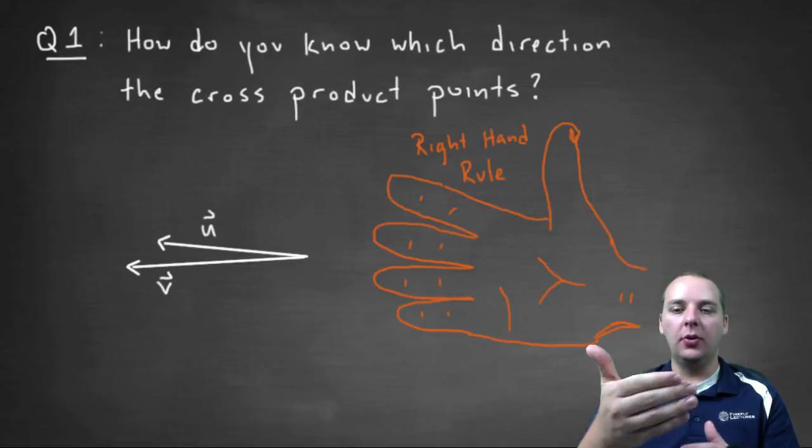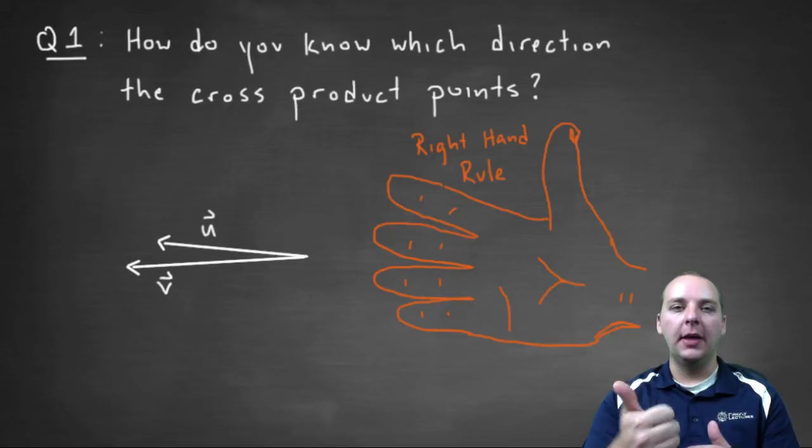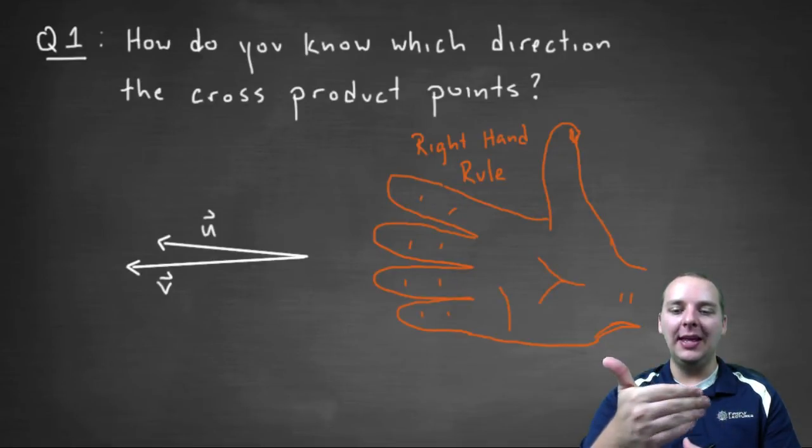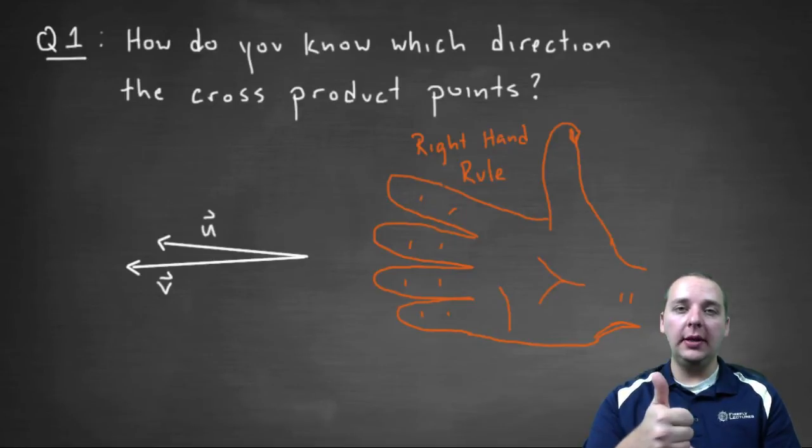So if you're doing u cross v, u cross v, then if your fingers start at u and end at v, your thumb is going to point in the direction of the cross product.